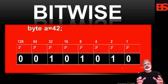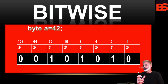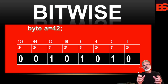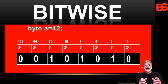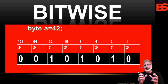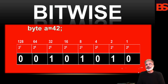Since the bitwise operators manipulate the bits within an integer, it is important to understand what effect such manipulation may have on a value. Specifically, it is useful to know how Java stores integer values. All of the integer types are represented by binary numbers of varying bit widths.